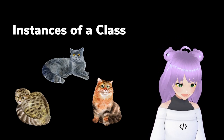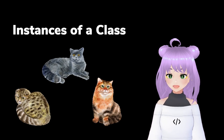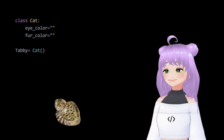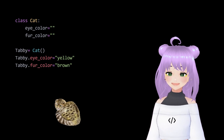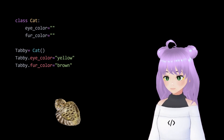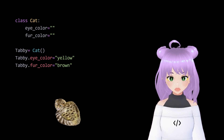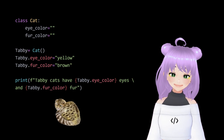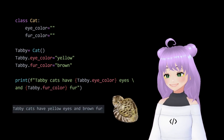Let's continue with some real-life examples. We are going to work with instances of a class — specific examples of a class — and we are going to start with a tabby cat. We are going to use our cat class and assign it to a tabby variable. And to make our tabby unique and special, we are going to set the eye color and fur color so we can know it's different from other cats. To do this, you have to use dot notation — for example, tabby.eye_color and assign yellow as a string, and tabby.fur_color as brown. And to make sure that we set up the class correctly, we can do a print statement that will show us that tabby cats have yellow eyes and brown fur.